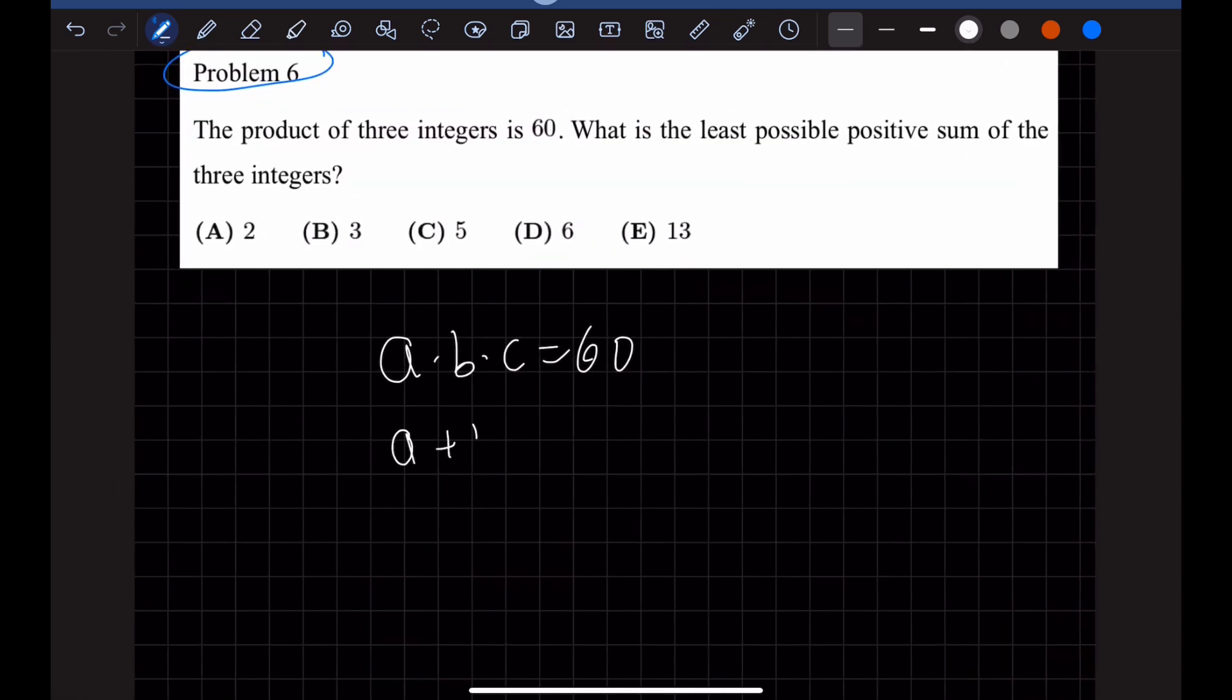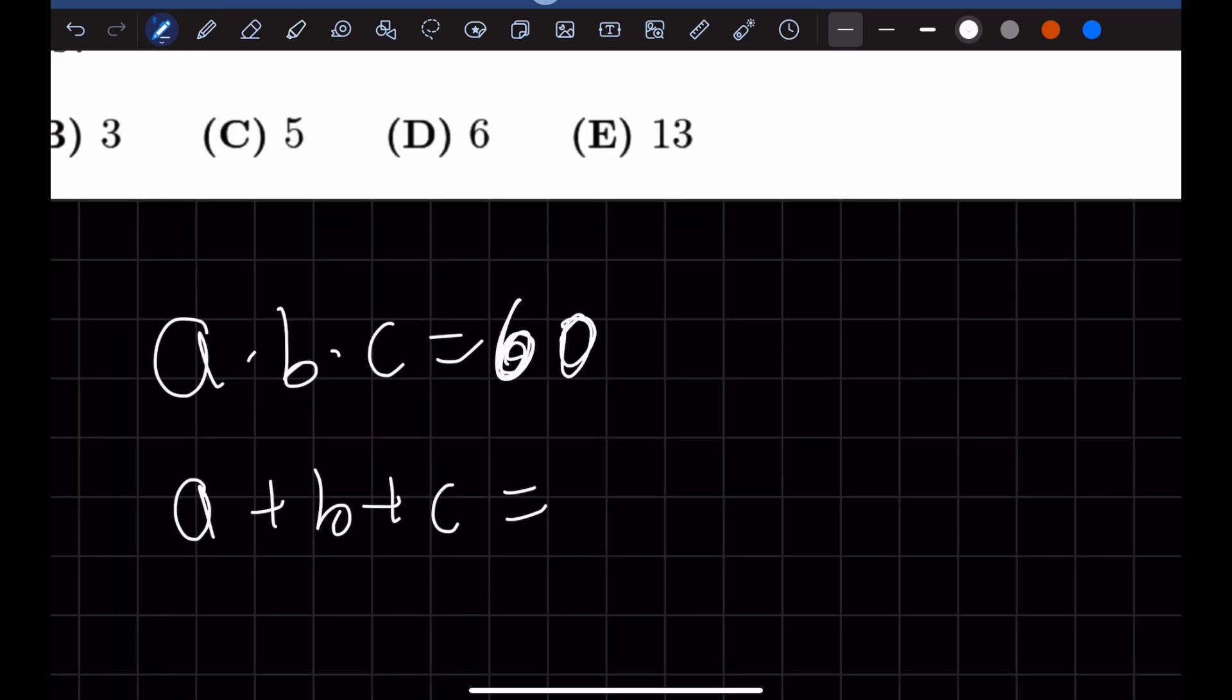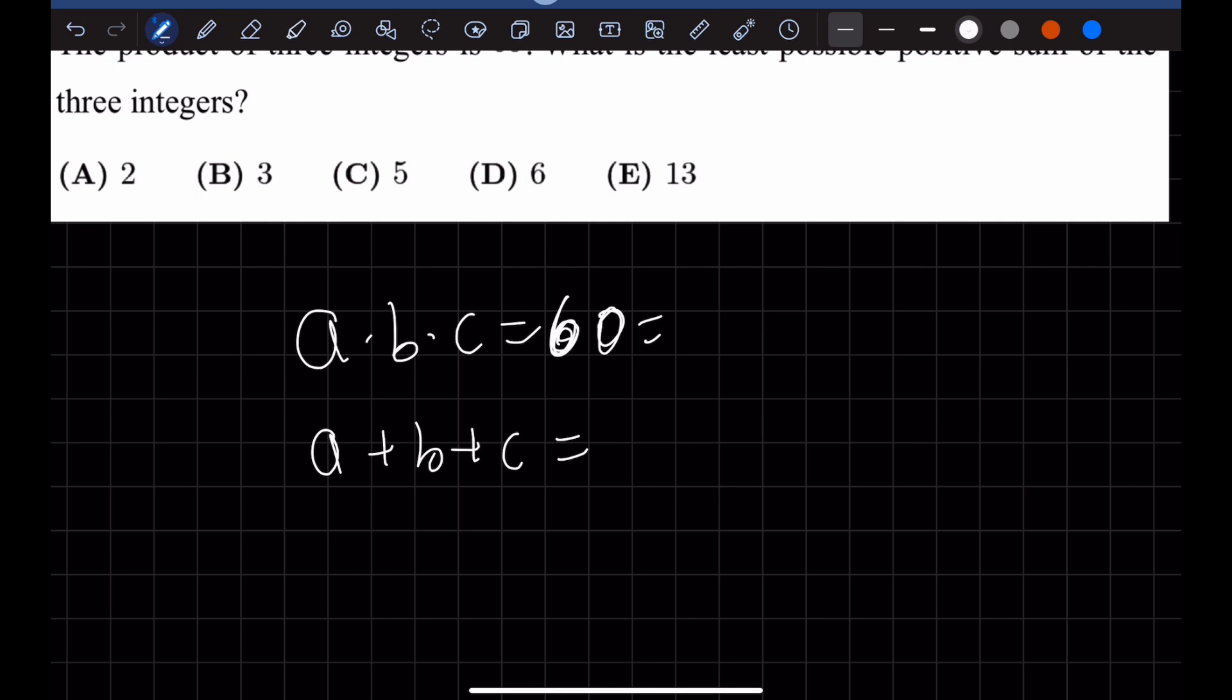We want to minimize A plus B plus C. Given these questions, I think it's often helpful to prime factorize the number since that's the only thing we could really do at this point.